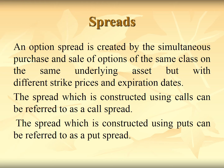An option spread is created by the simultaneous purchase and sale of options of the same class on the same underlying asset but with different strike prices and expiration dates. The spread constructed using calls is referred to as the call spread, and the spread constructed using puts is referred to as the put spread. You can use a combination of put and call options in order to make use of spreads.